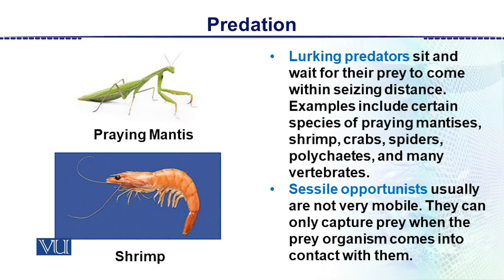Then there are sessile opportunists — they are fixed and cannot move from one place to another. They are usually not very motile and can only capture prey when the prey organism comes into contact with them.